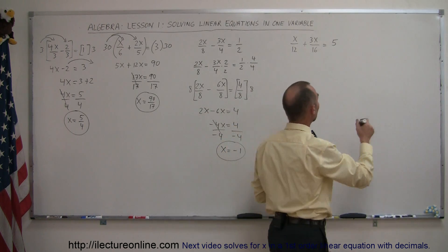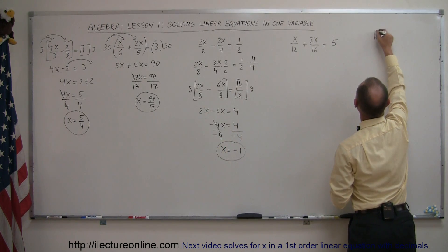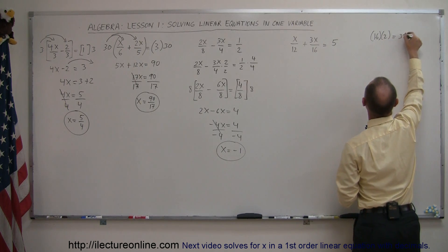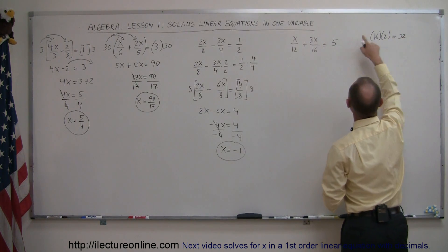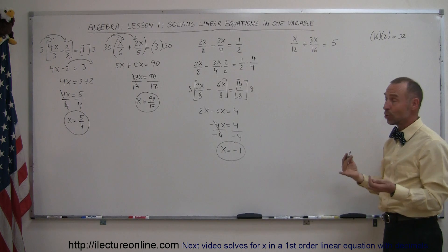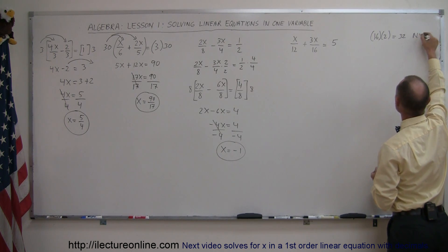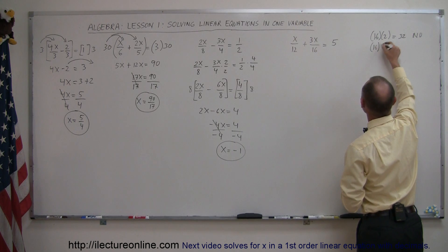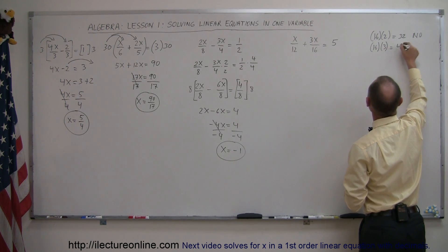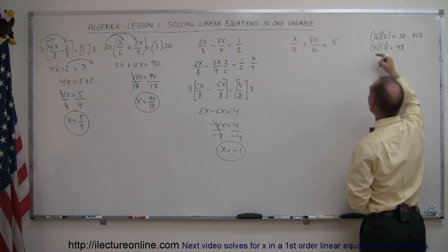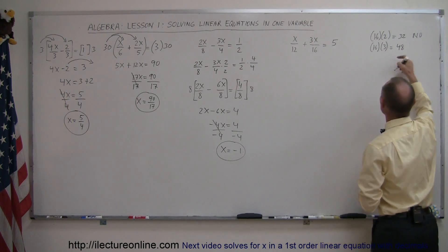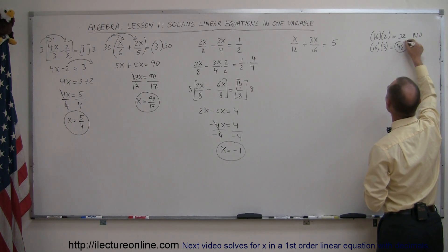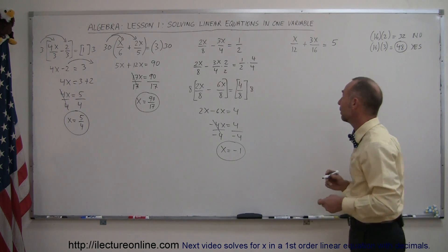Starting out with 16 multiplied times 2 gives us 32. Does 12 fit evenly into 32? No, it does not. So take 16 and multiply it times 3, that gives you 48. Does 12 fit into 48? Yes. So 48 can be your new lowest common denominator.